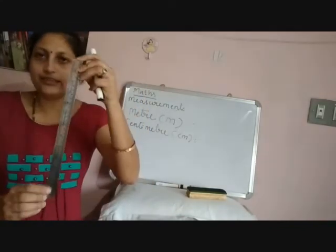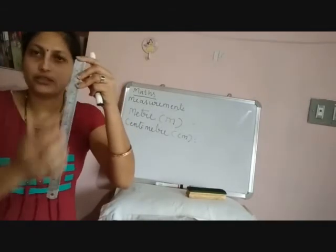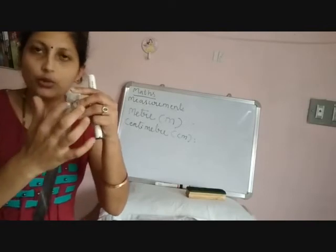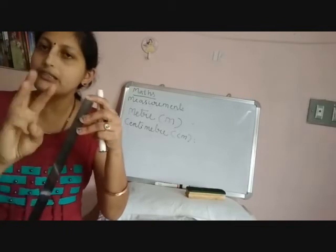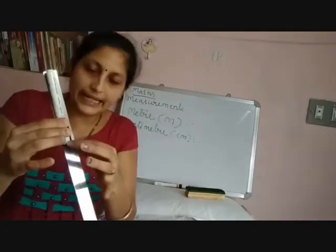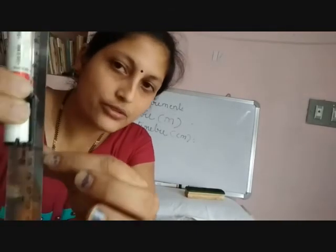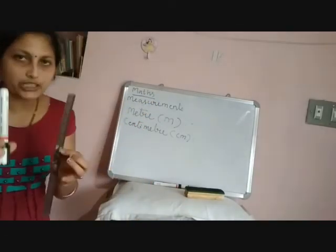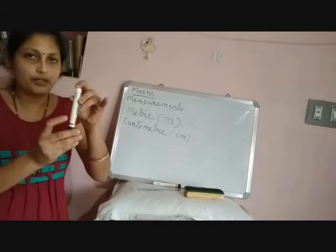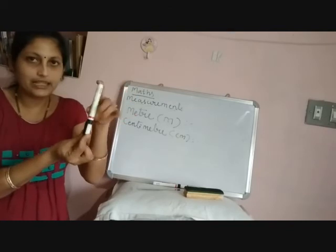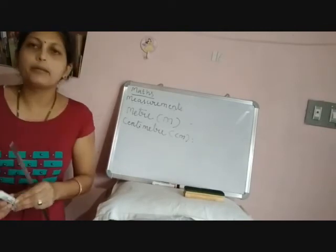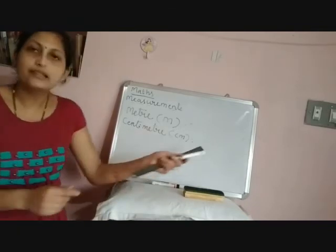So here is a scale — a longer one marked from 0 to 30. You might have a smaller scale marked 0 to 15. From 0 to 1 is 1 cm, from 1 to 2 is 2 cm, and so on. Start from 0 and see where the pencil ends on the scale. This pen ends at 14 on the scale, so this pen is 14 cm long. Even if you measure with your own scale, the length of the pen remains the same — 14 cm. Hence it is called a standard unit of length.